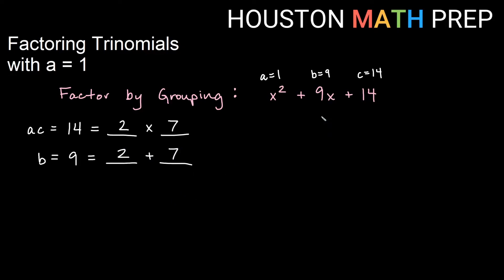So we will regroup our b term, 9x, in terms of 2 and 7. So we will have x squared. We don't change the first term. So regrouping 9x as like terms using 2 and 7 would be 2x and 7x. We will keep the c term as well. So again, all we've changed is broken up the b term, the middle term, into two separate pieces.